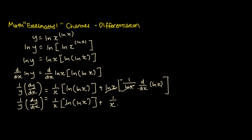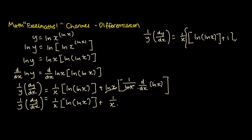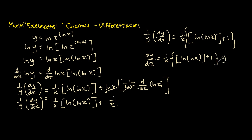We then factorize 1 over x out from the right-hand side, giving us 1 over y times dy over dx equals 1 over x times the bracket ln(ln x) plus 1. Last but not least, we multiply both sides by y, so dy over dx equals 1 over x times ln(ln x) plus 1, times y.